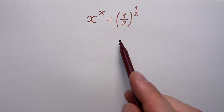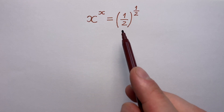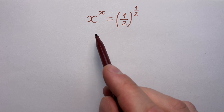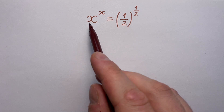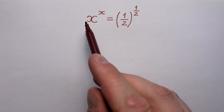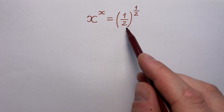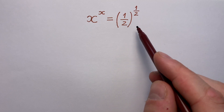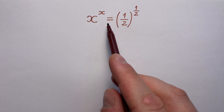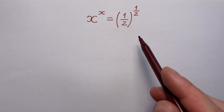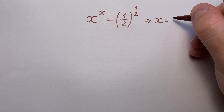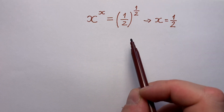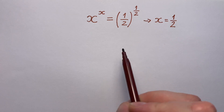If you're a normal person, you can see a very simple answer instantly. Look closely: x to the power of x on the left side, one half to the power of one half on the right side, and they are both equal. So the answer is x equals one half. Healthy and strong logic.